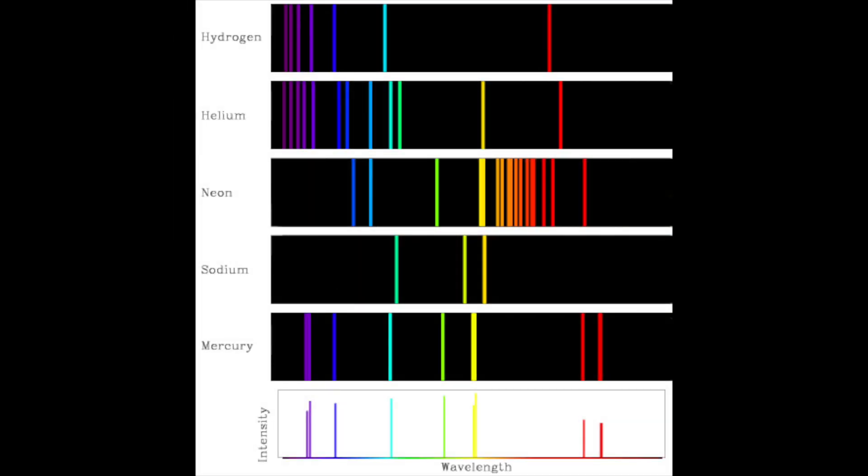One of the problems with the Rutherford model was that it didn't explain these strange colored lines that they got from different atoms, and they always appeared in the same locations. So another model was needed.